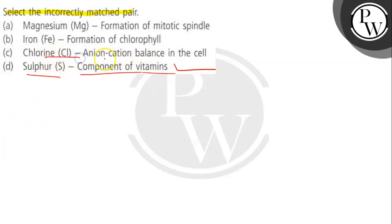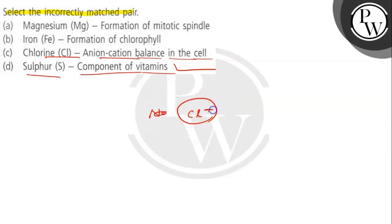Then chlorine. Chlorine is related to anion balance in the cell because it is an anion. So it acts in neutralization by balancing anion and cation in the cell. This is also a correct match.